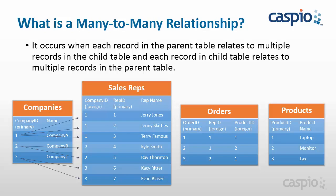For example, looking at the orders table, we see that the rep ID as a foreign key has number one twice — meaning Jerry Jones placed an order twice. The products he ordered are one and two, which in our products table are laptop and monitor. So Jerry Jones placed two orders: one for a laptop and one for the monitor. We also have Jenny Skittles who placed an order for a laptop as well, so we can see ID number one repeating inside the orders table. Now you can see how a parent table relates to multiple records in the child table and each record in the child table relates to multiple records in the parent table — this is a many-to-many relationship.